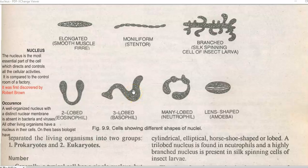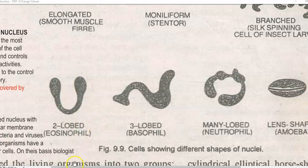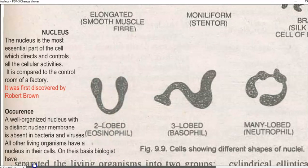Dear students, in this class we will look at the nucleus and then about the nuclear envelope or nuclear membrane. Nucleus is the most essential part of the cell. It is the one which directs and controls all cellular activities, all metabolic activities. It can be compared to a control room in a factory.